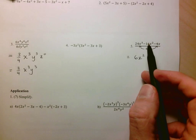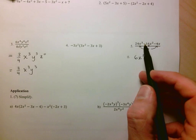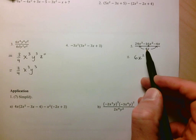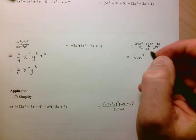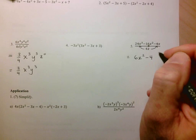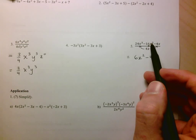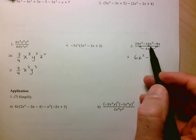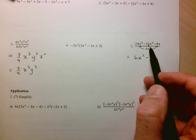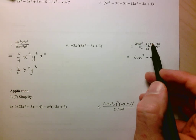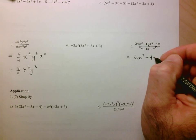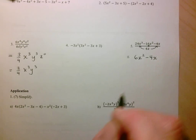Next we go to the second term. We have negative 16 divided by positive 4, which gives me negative 4. Then I look at the powers of x: x squared divided by x to the 1, so 2 minus 1 is 1. I'm just left with x.